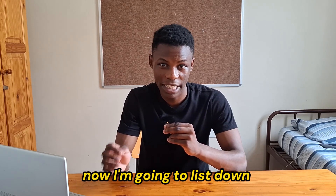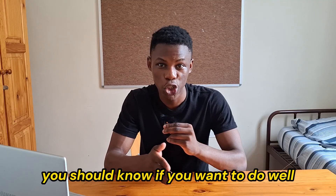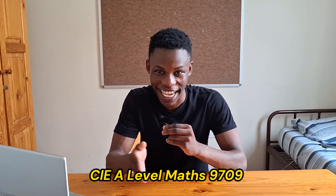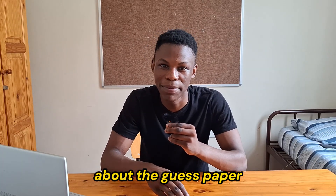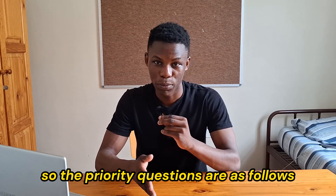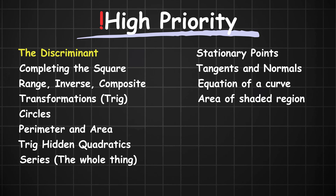So that's all eight topics. The priority questions you should know for the CIE A-level Maths 9709 Pure 1 May/June 2025 exam are: discriminant, completing the square, range/inverse/composite functions, transformations (especially trig transformations), circles, perimeter and area for circular measure, trig hidden quadratics, and the entire series topic — binomial expansion, arithmetic progressions, and geometric progressions. For differentiation: stationary points and tangents and normals. For integration: equation of a curve and area of shaded region.